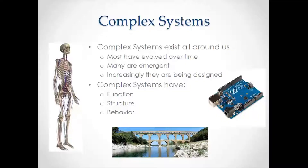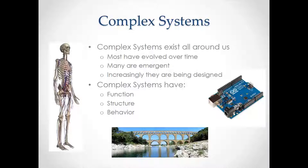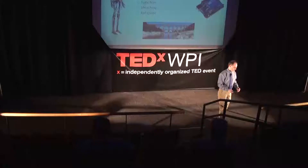Complex systems are all around us. These systems have evolved over time, over uncounted millennia. They have structure, they have function, they have behavior. But increasingly today, we're designing even more complicated infrastructures: telecommunications, power systems, computing devices. And I think we can learn something from the way that biology has evolved over millions and billions of years to attend to that task.